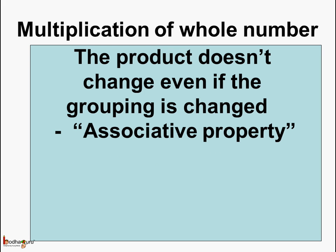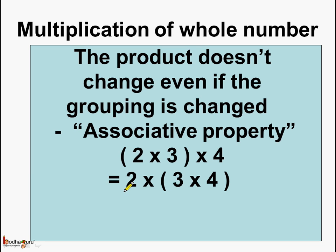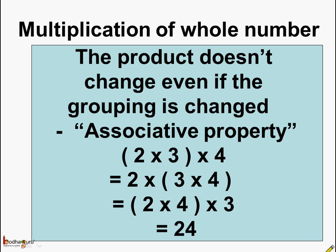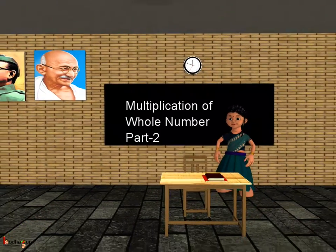So let us see what we learned today. In multiplication of whole numbers, the product doesn't change even if the grouping is changed — this is the associative property of multiplication of whole numbers. For example, (2 × 3) × 4 is the same as 2 × (3 × 4), which is the same as 2 × (4 × 3), and all are equal to 24. Here we grouped 2 and 3, here we grouped 3 and 4, and here we grouped 2 and 4 — in all cases the answer is 24. So now you know the associative property and the multiplicative identity of whole numbers. Bye-bye children.